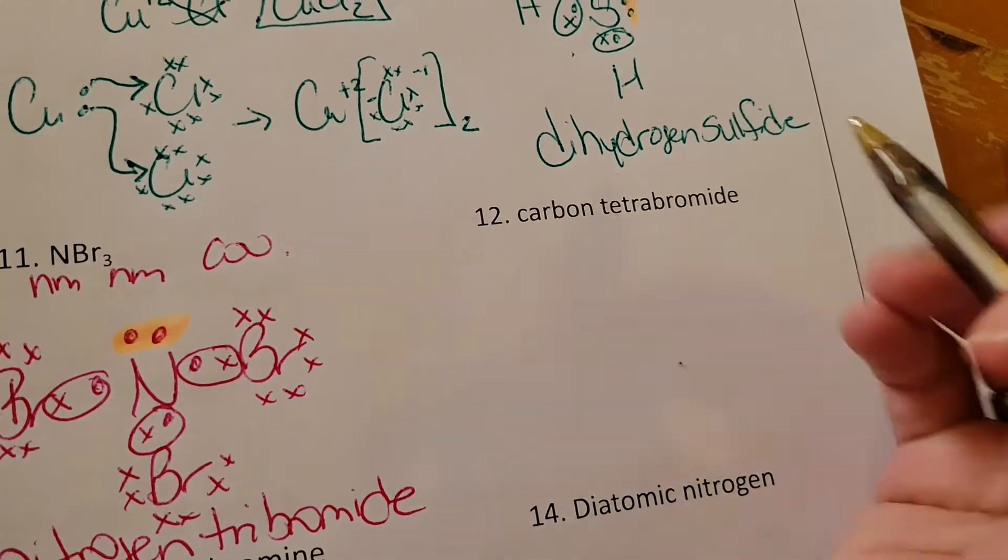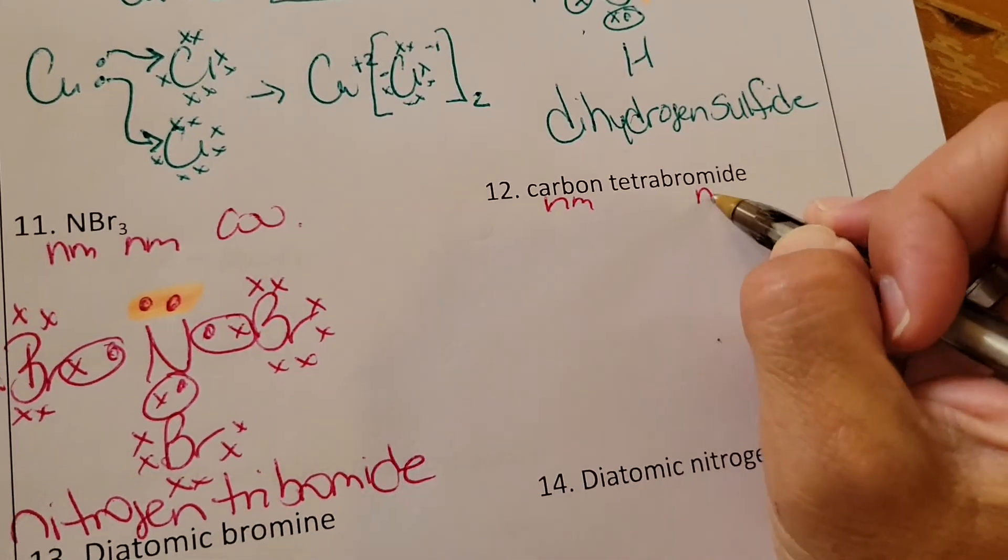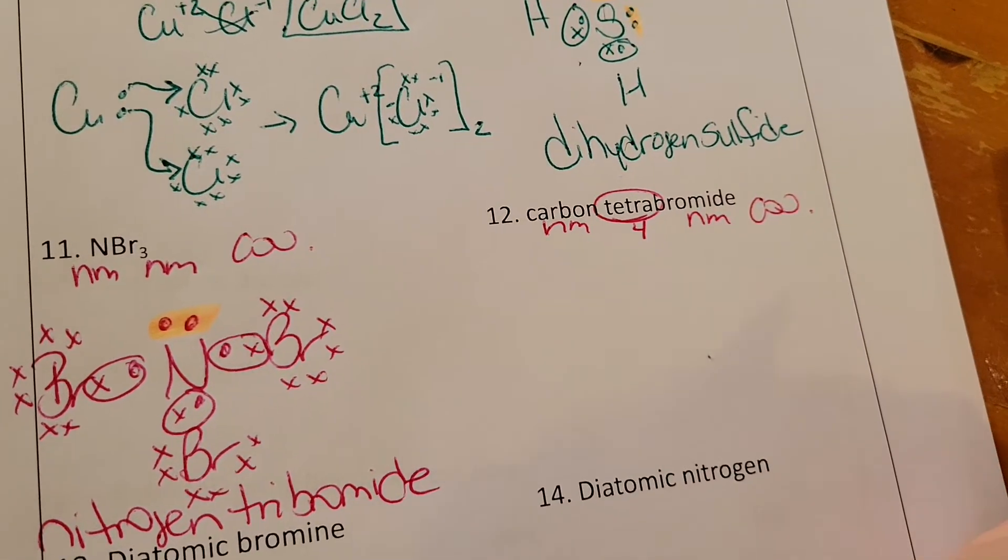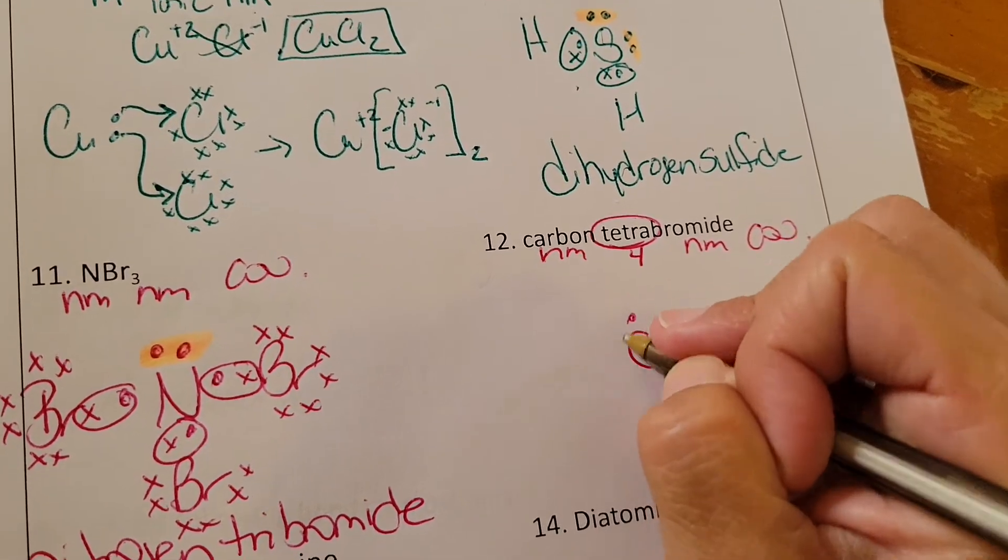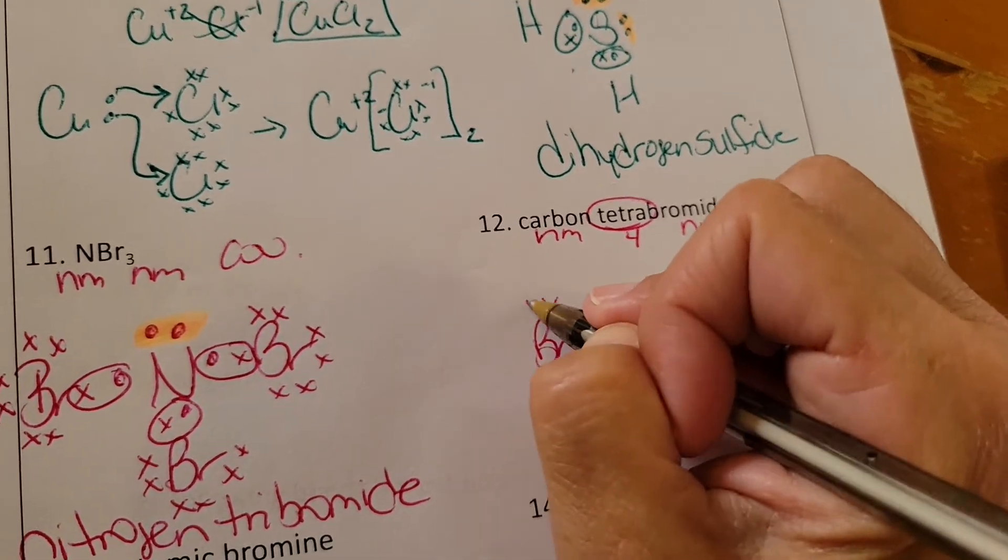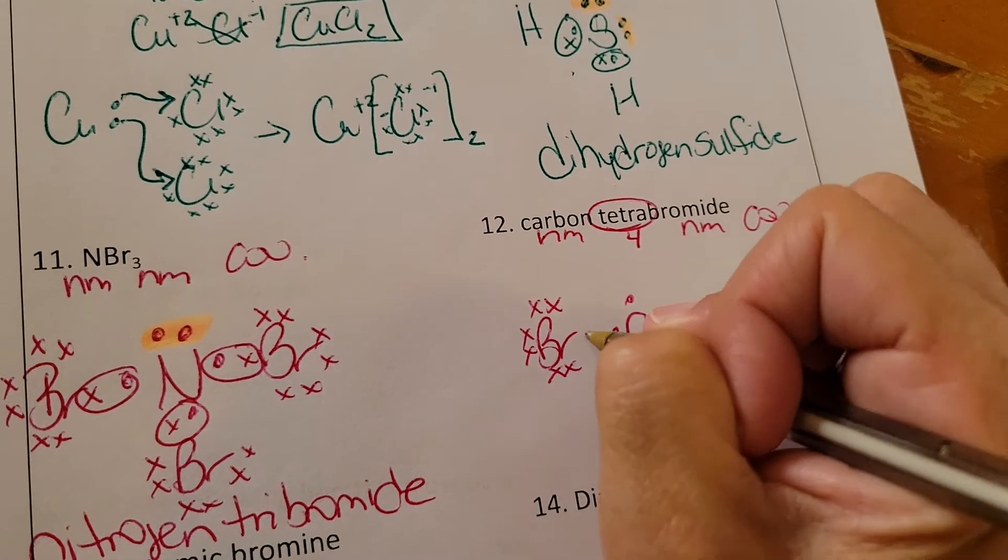Carbon non-metal, bromine non-metal, tetra means four. So all kinds of indications that this is covalent. Carbon has one, two, three, four. Bromine has seven: one, two, three, four, five, six, seven.